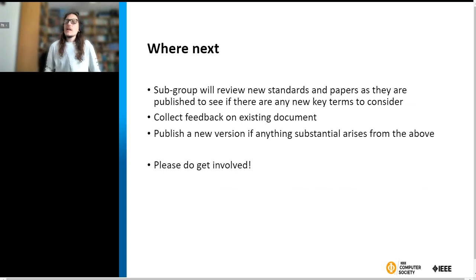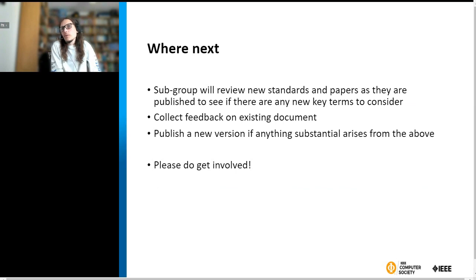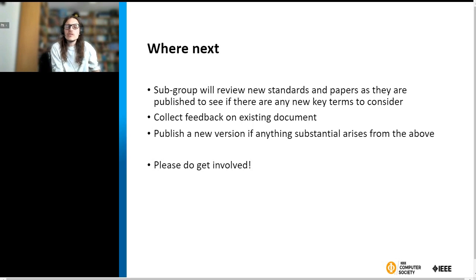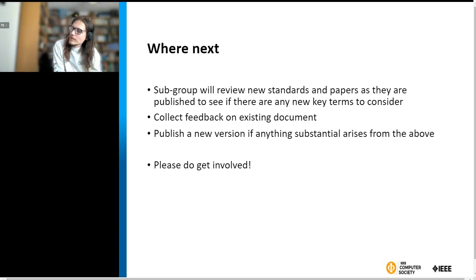Here are the keywords that were defined. I encourage people to go and read the white paper and find the definitions. It shows that we took a reasonably wide range of terms, some of which seem obvious, but even if they were obvious, they quite often had multiple definitions. We have some defining what is a system, what is an item, a hierarchy of how they go together and may be used. The aim is that the subgroup will review new standards and papers as they are published to see if there are any new terms to consider. We also want to collect feedback on the existing document and keep publishing revisions to the white paper, making sure that it stays a live document and doesn't just die. Please do get involved.